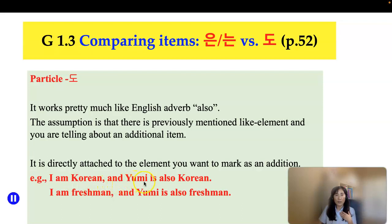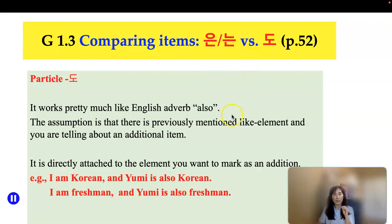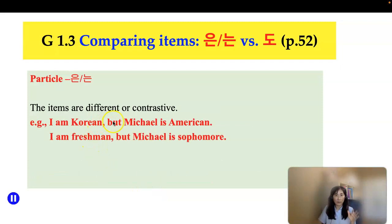And 'Yumi is also Korean' — so Yumi and I are both Korean. To indicate that Yumi is also Korean, you add particle 도 to Yumi. Same thing: 'I'm a freshman, and Yumi is also a freshman.' So when you say something and then add an additional item which is similar to the previous one, you add particle 도 to the item you want to mark as an addition, like 유미도.